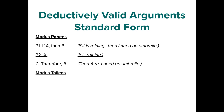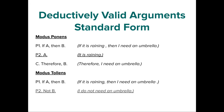The next valid form is modus tollens — Latin, so it's valid; starts with a conditional. The English name is 'denying the consequent,' telling us what happens on premise two. The consequent is B, so we deny it: if A then B; not B; therefore not A. Example: If it is raining, then I need an umbrella. I do not need an umbrella. Therefore it is not raining.